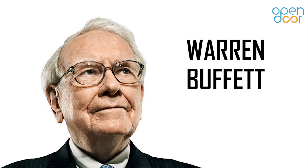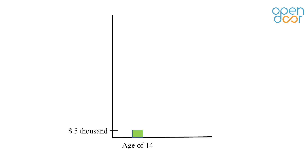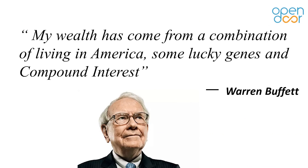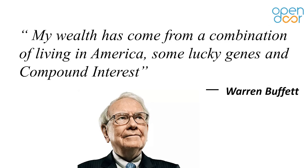If that was not enough for you, let me give you one more example. Have you heard about Warren Buffet? He is one of the richest persons in the world. Do you know how he became so rich? He started with just 5000 dollars at the age of 14, and now his net worth is 91 billion dollars. In his own words: 'My wealth has come from a combination of living in America, some lucky genes, and compound interest.' Do you now appreciate the beauty of compound interest?